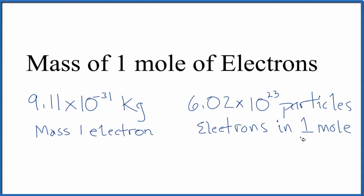At this point, you should be thinking: if one electron has this mass and one mole of electrons is this many, we just need to multiply these two numbers together. That'll tell us the mass of one mole of electrons.